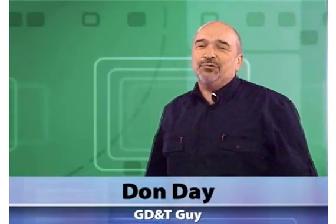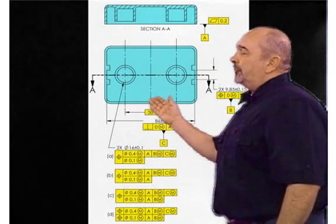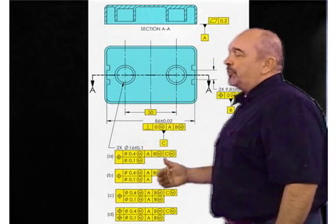A lot of people remain confused over the differences between composite and two single segments. So to help clear it up, I created a drawing. On this drawing, I have a pattern of two holes and I've shown four possible geometric controls.